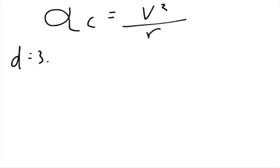The centripetal acceleration is equal to the velocity squared over the radius. We already have the radius. The radius, it tells us that the diameter is equal to 3.6 miles.